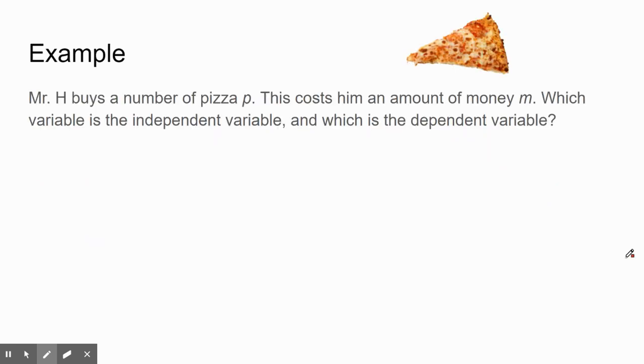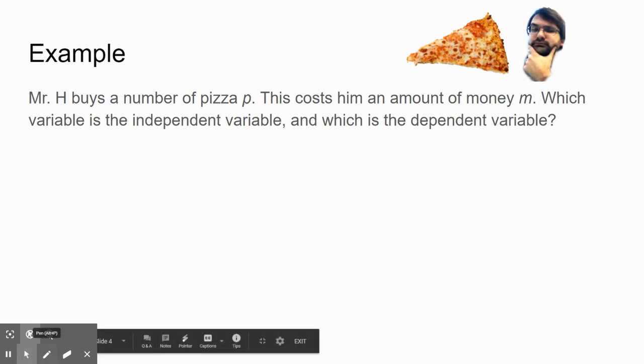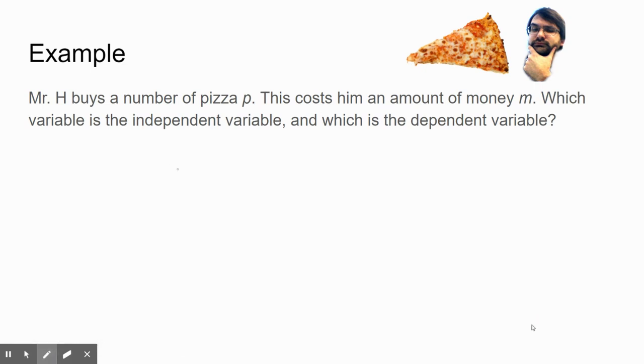So in this example, we are going to figure out which variable is independent and which one is dependent. The scenario we have is Mr. H, that's me, buys a number of pizzas P. This costs me an amount of money M. So we have our two variables. We have P and we have M. We need to figure out which one is independent and which one is dependent.